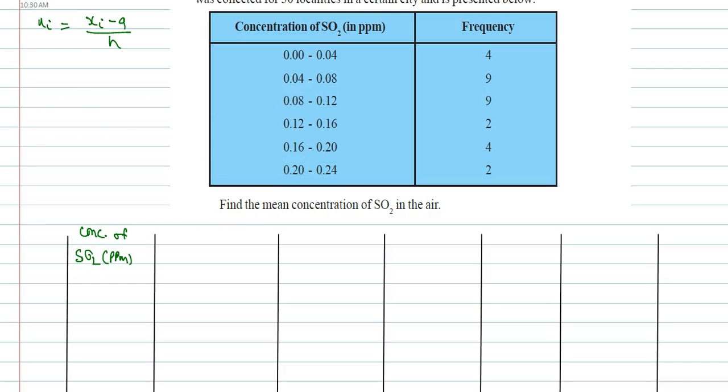The concentration is given in interval form, so I can write 0.00 to 0.04, 0.04 to 0.08, 0.08 to 0.12, 0.12 to 0.16, 0.16 to 0.20, and 0.20 to 0.24. So this is the interval of concentration of SO2 in ppm.